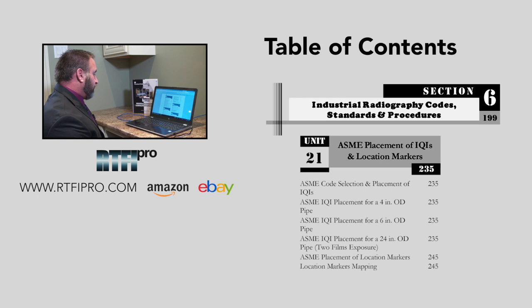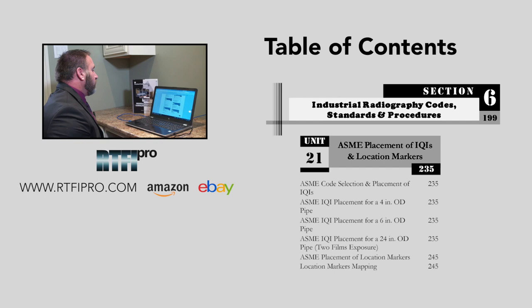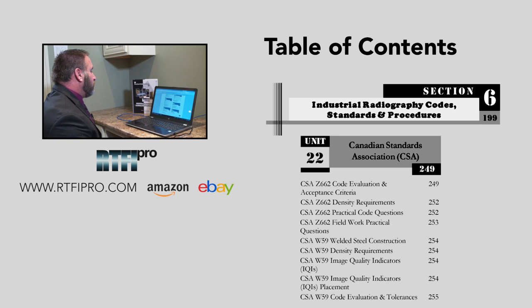Unit twenty-one covers ASME code inquiries and interpretation, and ASME placement of IQIs and location markers — telling you where to put the IQI, what's acceptable and what's not. Topics include ASME code selection and placement of IQIs, ASME placement for 4-inch OD pipe, 6-inch OD pipe, 24-inch OD pipe with 2-film exposure, ASME placement of location markers, and location marker mapping.